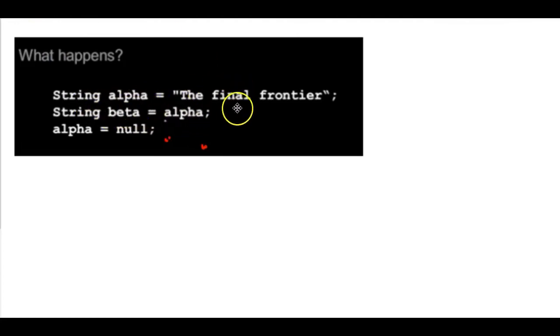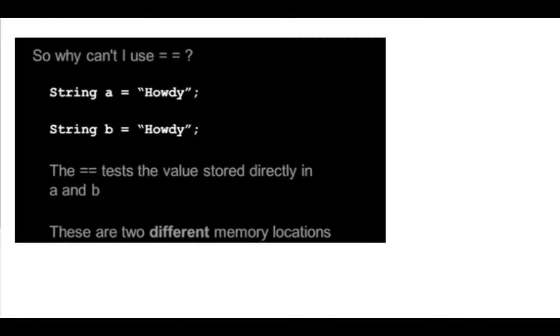So, if we look at this, this is what it would look like in code. If we had string alpha and we set it equal to the final frontier, and then we assign beta to alpha, which is setting up an alias, so now beta and alpha are pointing to the same thing in memory. And then we assign alpha to null. What will happen in memory? Well, what happens is that the tag that is on the final frontier is alpha, and then we're adding another tag called beta. And then finally, we're getting rid of the alpha tag, and all that's left is the beta tag. So it didn't lose its reference. It's still there.